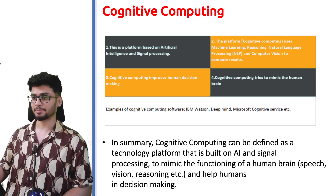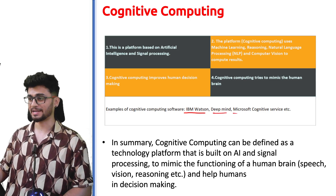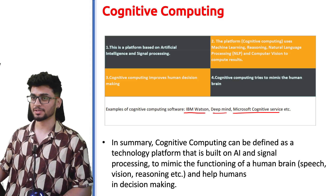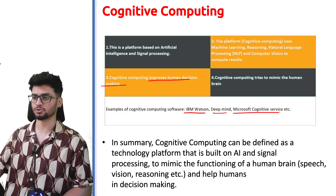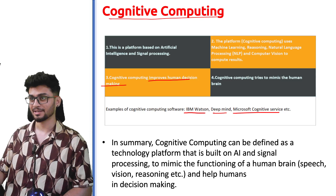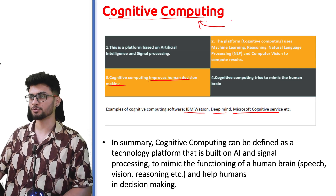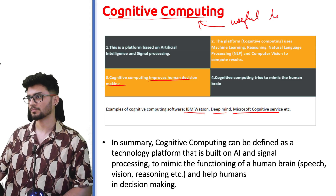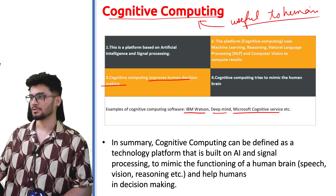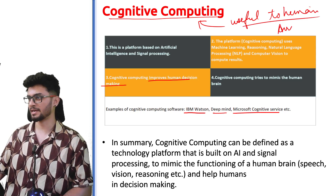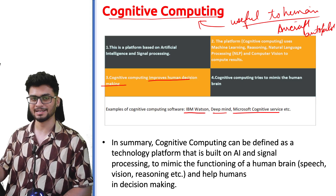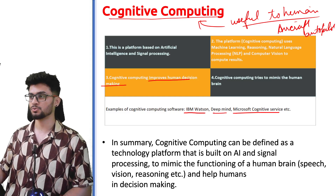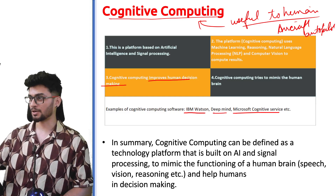The biggest examples of cognitive computing are IBM Watson, DeepMind, and Microsoft Cognitive Services. What they do is process the inputs and then help humans make decisions. It is not always right, but it can be useful. For example, an aircraft autopilot — it cannot fly the plane on its own, but it can help pilots maneuver the aircraft properly.